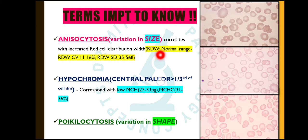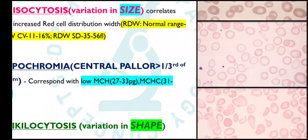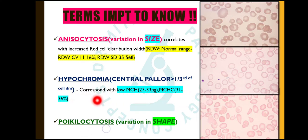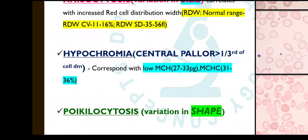When there is anisocytosis, the RDW will be increased, as it correlates with anisocytosis. Next is hypochromia, which is very important. Normally the central pallor is less than one third of the diameter of the cell, but if it is more than one third, we say that the RBCs are hypochromic. A hypochromic RBC corresponds with a low mean corpuscular hemoglobin (MCH). MCH is the total amount of hemoglobin in a single red blood cell; the normal value is 27 to 33 picograms. Hypochromia also corresponds with a low MCHC; normal MCHC is 31 to 36 percent.